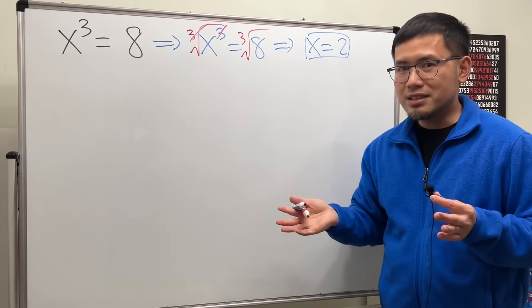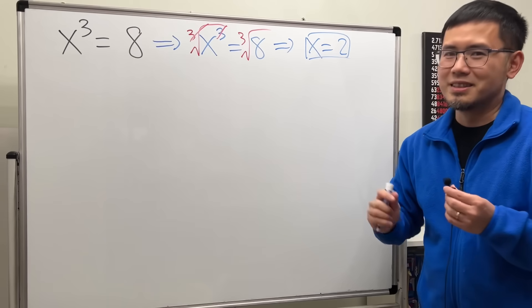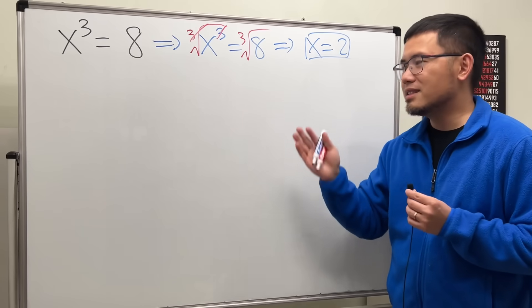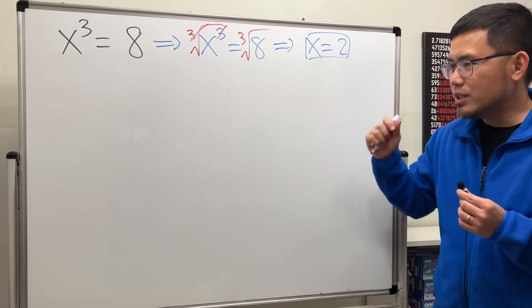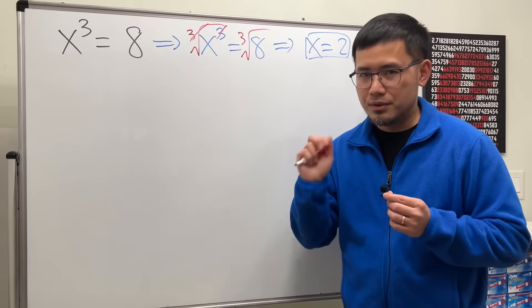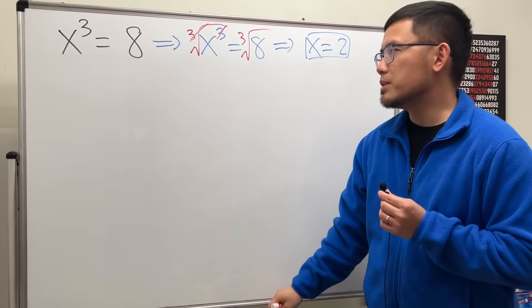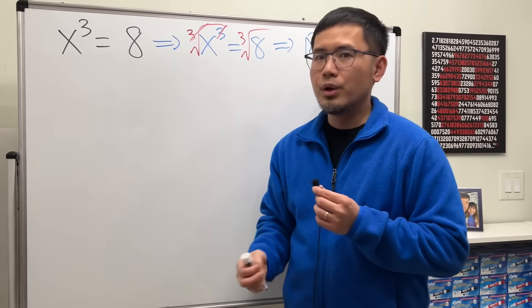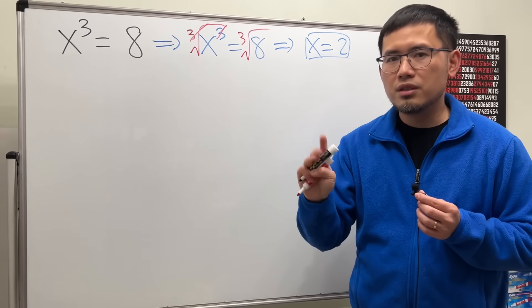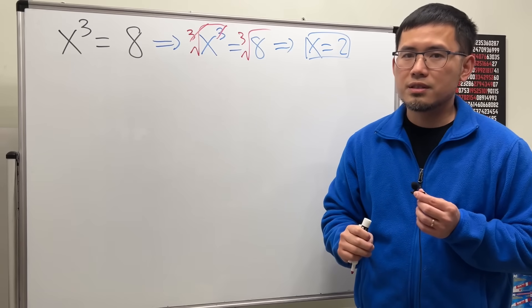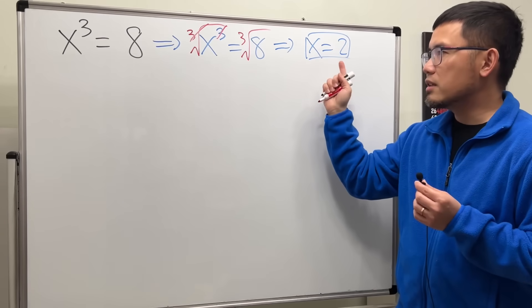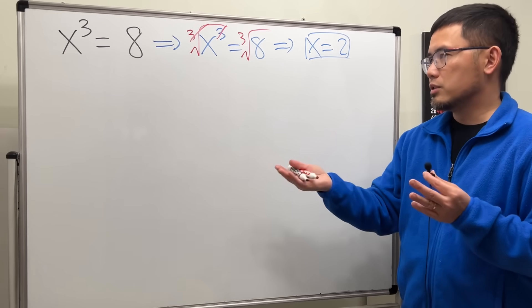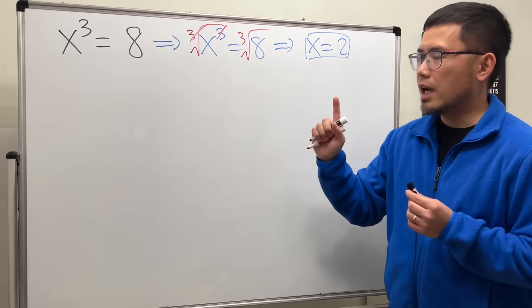Well yes, but this is not complete. In fact, this is only one of the answers. This is the only real solution — we actually have two more. The reason is that x to the third power can have at most three different solutions. The first is the real solution, and we have two more complex solutions.